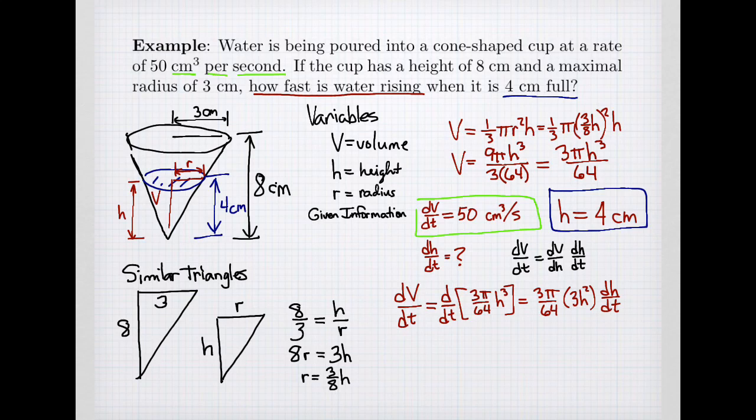And now I have an equation for my various values. So we can now substitute our values that we know. Well, my rate of change of volume is 50, 3 pi over 64 times 3. My height is 4, so I get 4 squared times the rate of change of height, which is the unknown, dh dt.